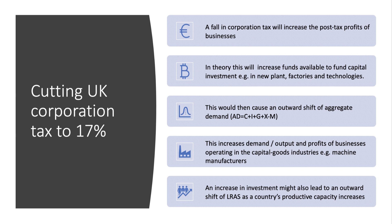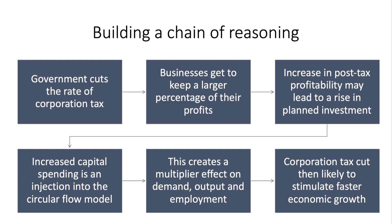Not only is there a potential demand-side effect, but an increase in capital investment prompted by a cut in tax might also lead to an outward shift of aggregate supply as the country's productive capacity grows. The government reduces the rate of corporation tax, businesses keep a larger percentage of their profits, and this rise in post-tax profits may lead to rising investment — which is an injection into the circular flow model. This rising investment can create a positive multiplier effect on demand, output, and jobs, meaning the corporation tax cut could stimulate faster short-term and long-term growth.